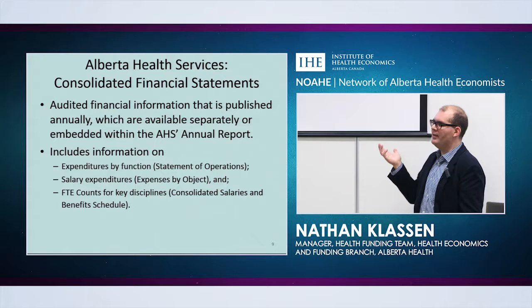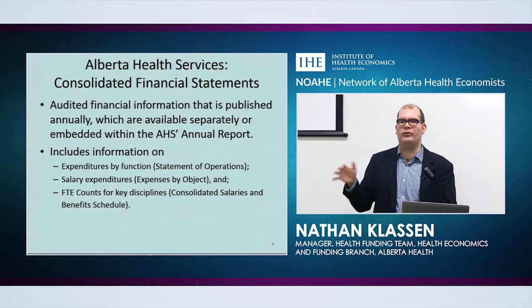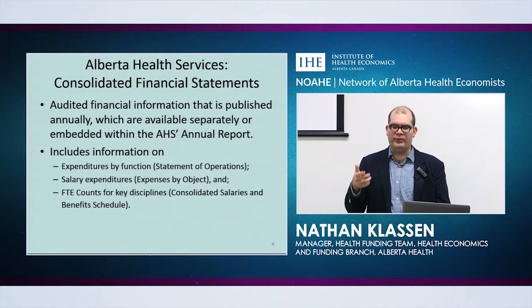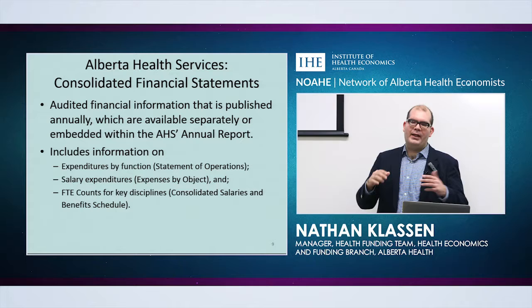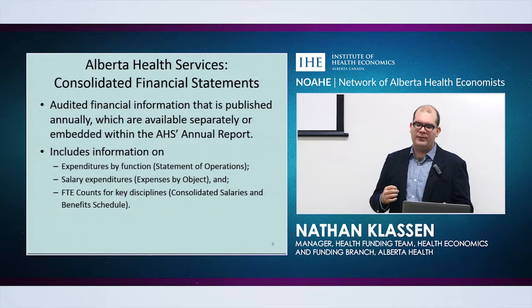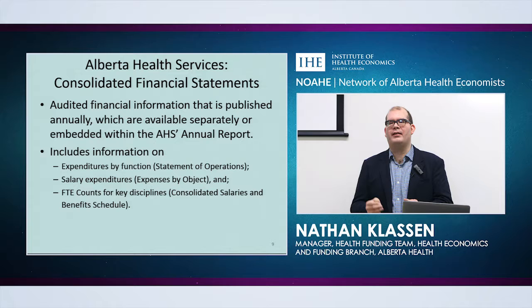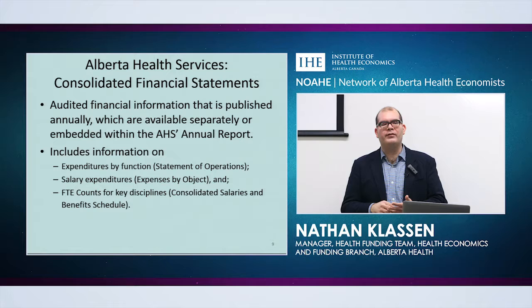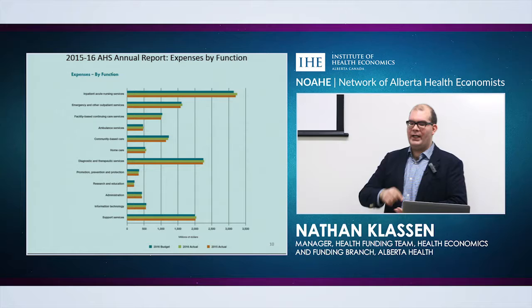Something people are probably familiar with is AHS's own financial statements — it connects to some data sources we'll discuss later. The financial information is audited, so it's very high quality. You can get it either within the annual report or download it separately. Particularly useful is expenditures by function in the statement of operations. There is also an expenses-by-object breakdown, which breaks down how much AHS spends on salaries, contracts with other providers, and similar items.